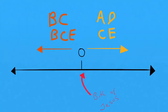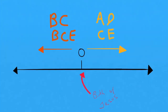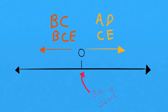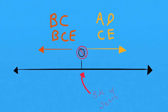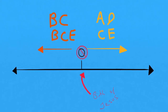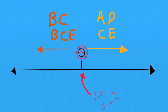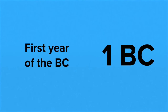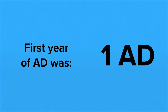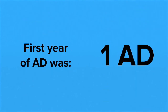This is where people get confused. They think there's a year zero — but guess what, there isn't. There is no year zero. In other words, the year before Jesus was born was 1 BC, and the year after he was born was 1 AD.